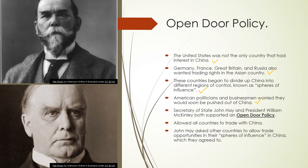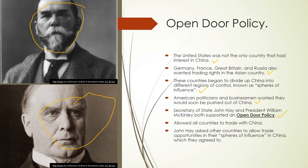To resolve this, Secretary of State John Hay — shown in the top picture — and President William McKinley — shown in the bottom picture — both supported an Open Door Policy. This policy allowed all countries to trade with China across the different spheres of influence. So if Germany had control of a certain part of China, the United States, England, and France could trade there as well, and Germany could trade in other regions too.